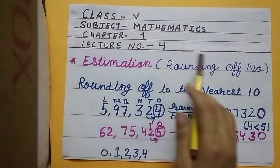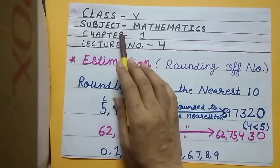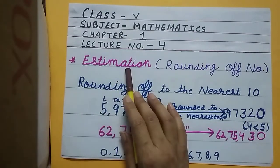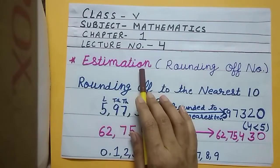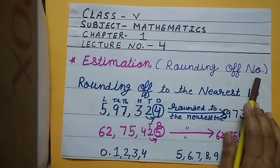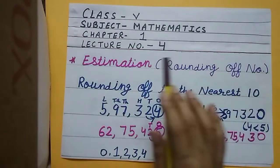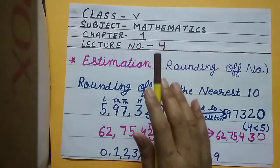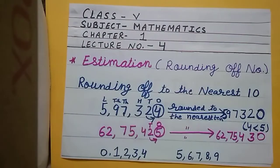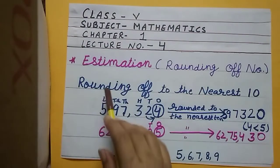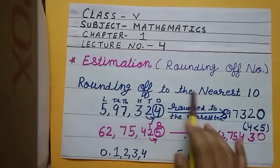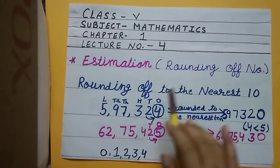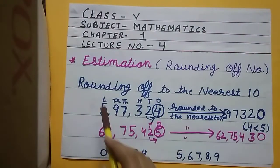Good morning students, welcome back to our mathematics class, class 5th chapter 1 lecture 4. In this class we will study about the subtopic estimation. Estimation is also known as rounding of numbers. A large number may be rounded off to the nearest ten, hundred, thousand, ten thousand, lakh, etc. We will study rounding off to the nearest ten, nearest hundred, nearest thousand, nearest lakh, and nearest ten lakh.